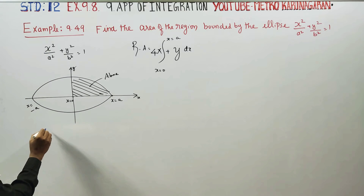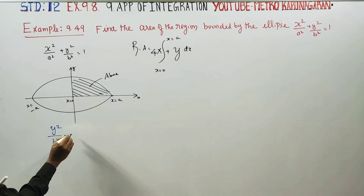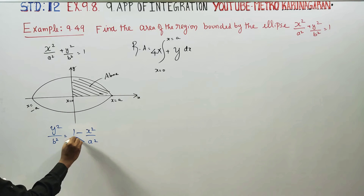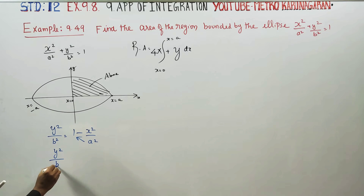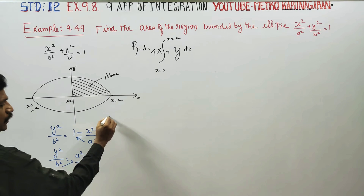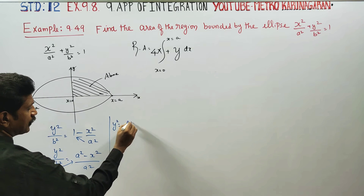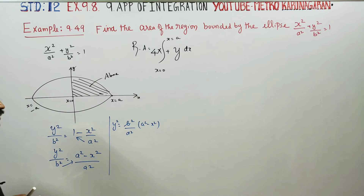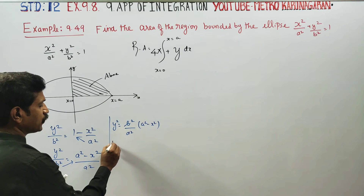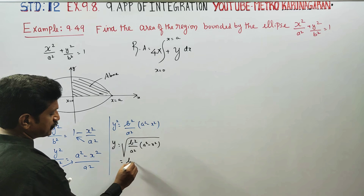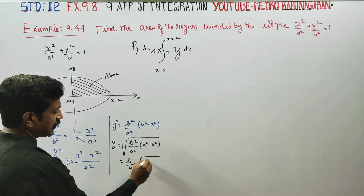From the equation, y²/b² = 1 − x²/a². Cross multiplying: y²/b² = (a² − x²)/a², so y² = b²(a² − x²)/a². Taking the square root: y = (b/a)√(a² − x²).